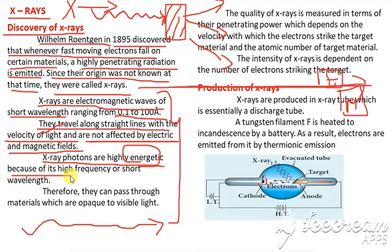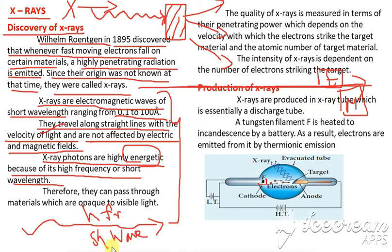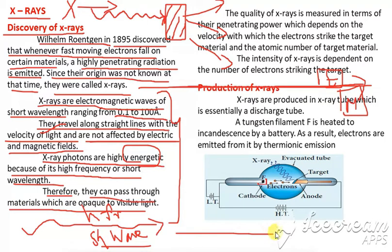Because of their high frequency and short wavelength, X-ray photons are highly energetic. Therefore, they can pass through materials which are opaque to visible light. Visible light cannot pass through opaque objects, but X-rays can pass through them — we know X-rays can pass through even our flesh, which is opaque to visible light.